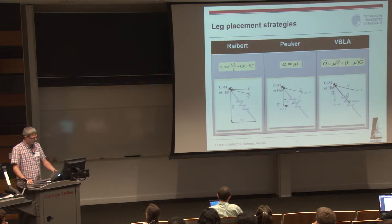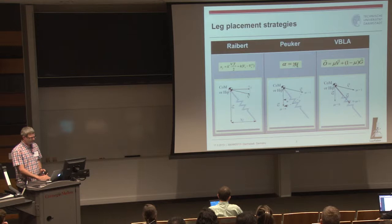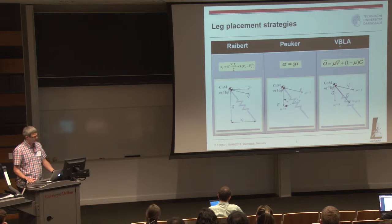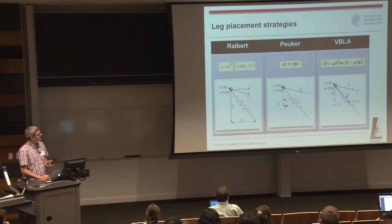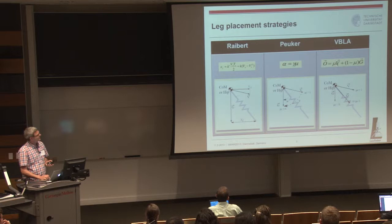The third strategy is called velocity-based leg adjustment. The difference from the Frank Volcker approach is that you're not taking just the orientation of the velocity into account but also the vector itself. Basically, you get a vector of the leg orientation depending on the velocity vector and the gravity vector. These two vectors are taken into account by a ratio or factor U.